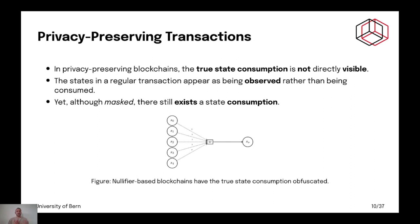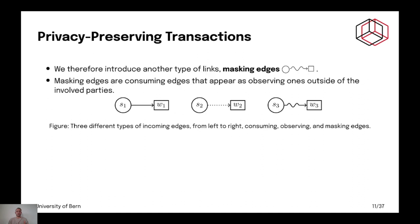So, we need to fill this gap. And for that purpose, we actually have the masking edge. Masking edge has the same set of rules as consuming edges, but it appears as an observing edge towards non-evolved bodies. So, a masking edge is this wobbly edge on the far right.